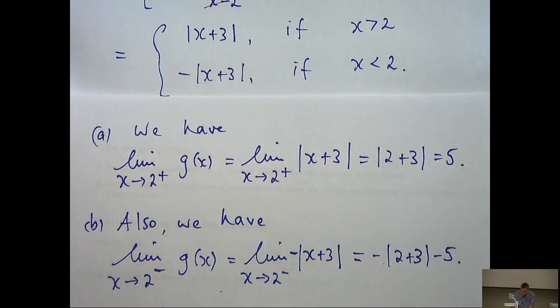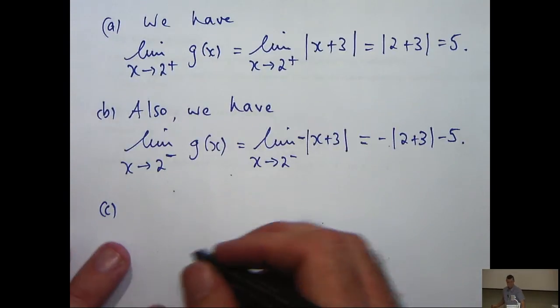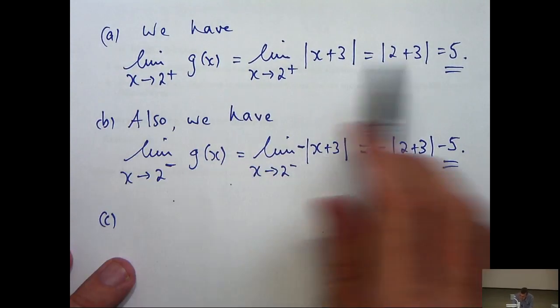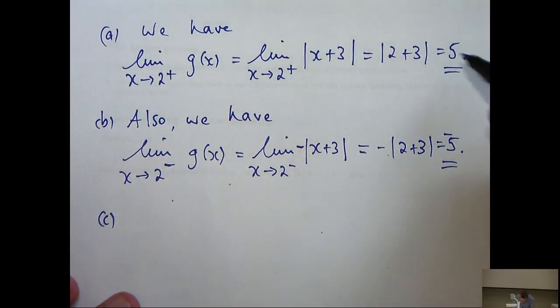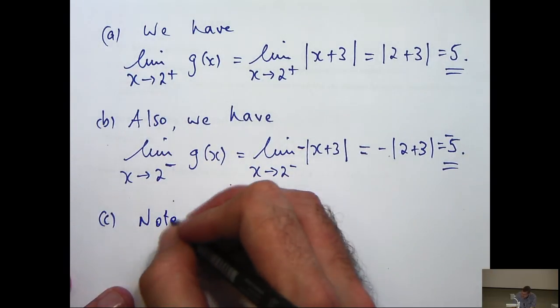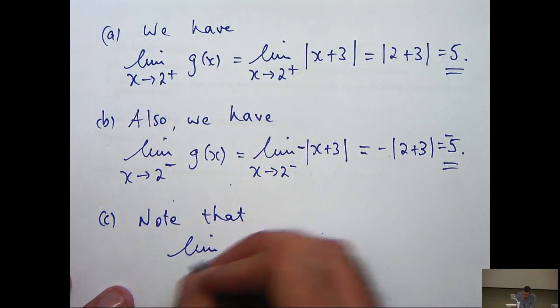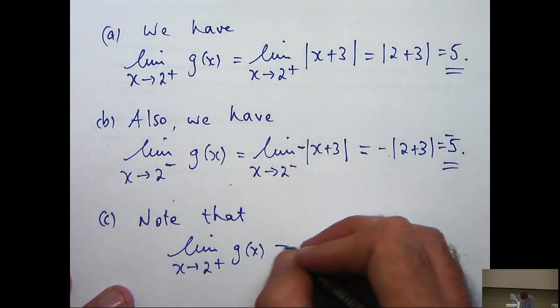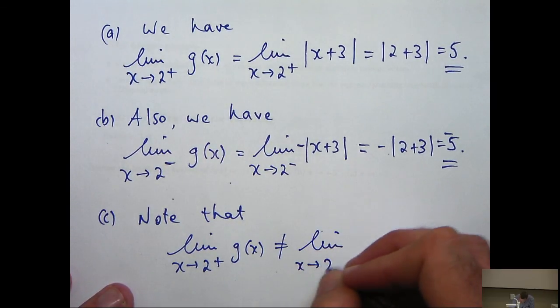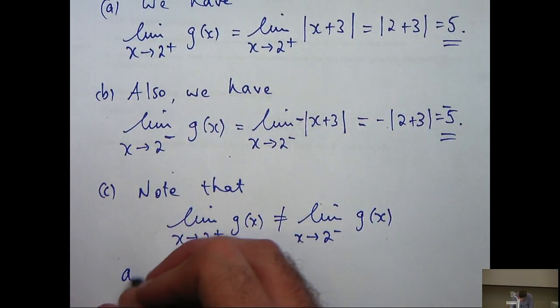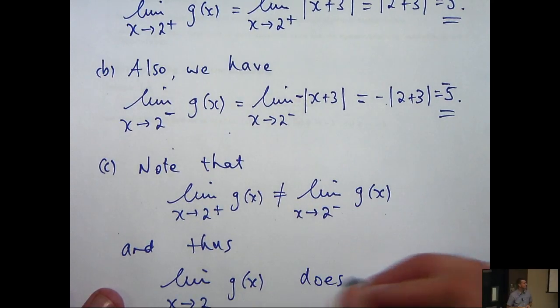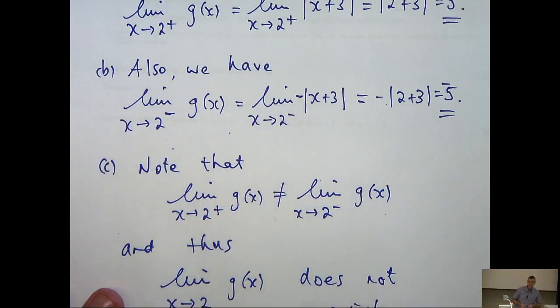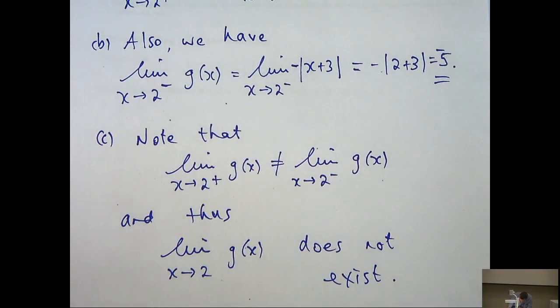So the last question is, what is the limit of g as x approaches 2? Now notice that our right-hand limit and our left-hand limit are not equal. Sorry, this should be equals minus 5. Notice our right-hand limit and our left-hand limit are not equal. So by definition, this limit does not exist. Okay, so that's the problem solved.